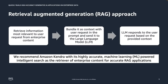An approach called retrieval augmented generation can be used to address some of these needs of enterprise generative AI applications. What this approach does is: first, information most relevant to a user's request is retrieved from enterprise content. That information is then bundled as context with the user request in the prompt and sent to the large language model, and based on this context the LLM responds to the user request.